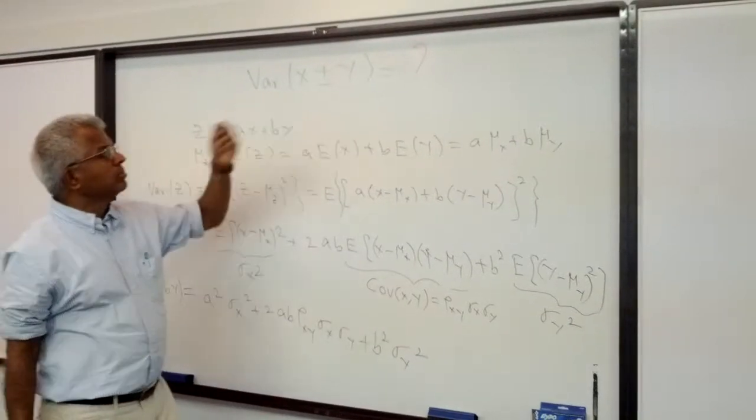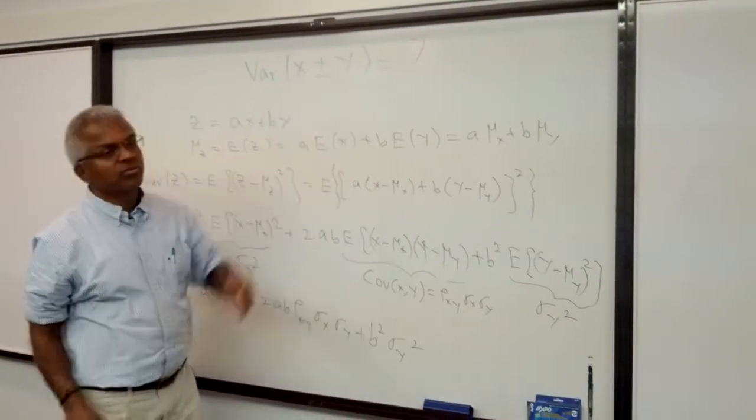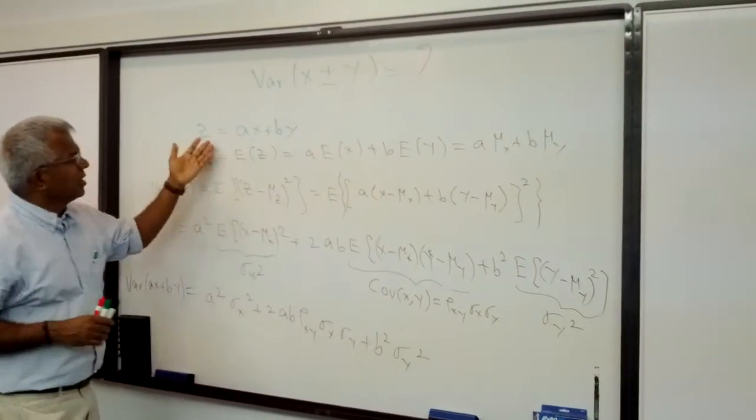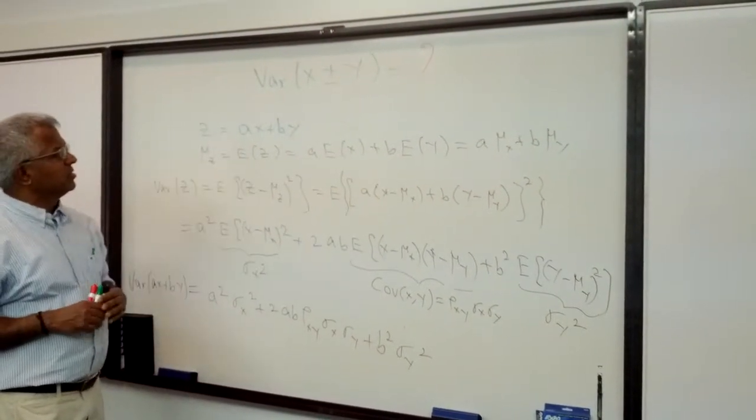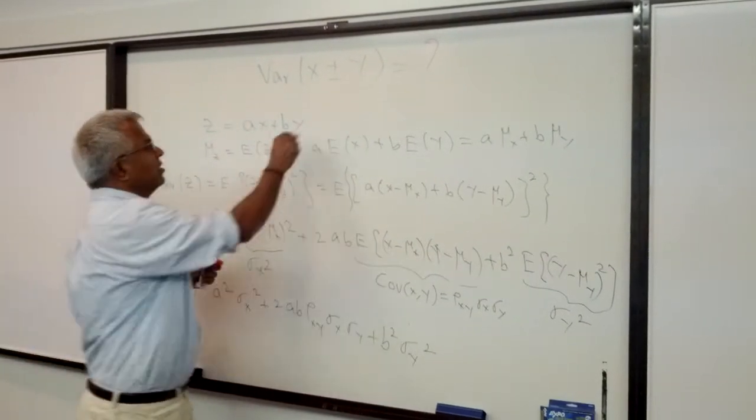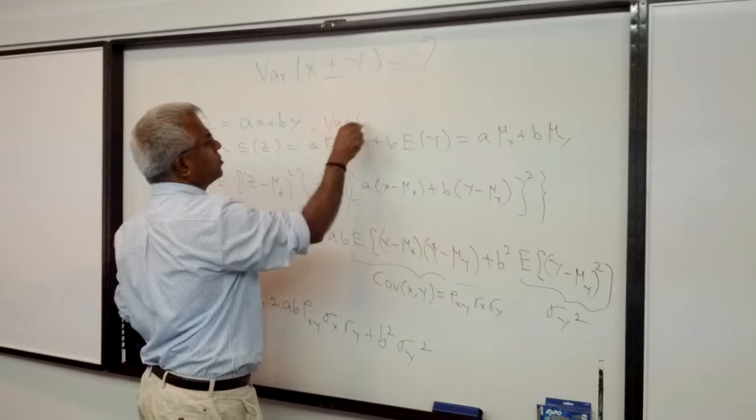Let's look at a classic problem which is the variance of sum or difference of two random variables. We will look at it a little more generally. Suppose I define Z to be Ax plus By. Let me try to find the variance for Ax plus By.